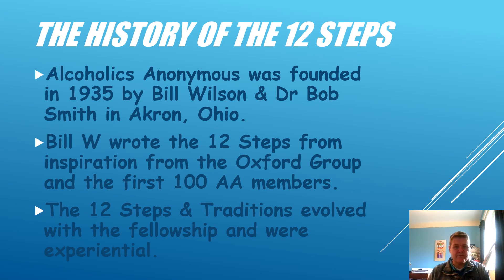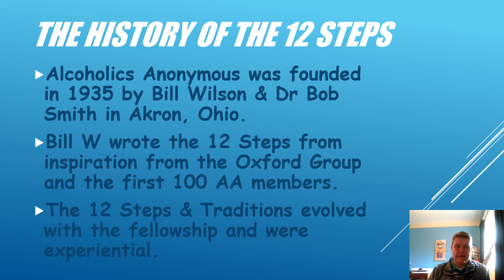Bill W. wrote the 12 steps, drawing inspiration from all over the place, but a lot came from a think tank called the Oxford Group, which was a kind of religious-based group, and also from the first 100 AA members. The 12 steps and traditions evolved — no one just sat down and wrote them out. They came from everyone's experience: what worked for people, what didn't work, what helped and what didn't. That's how they were formed.